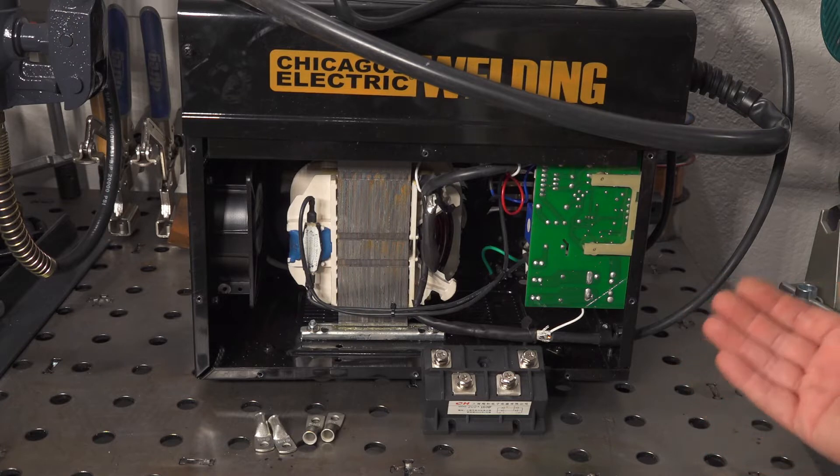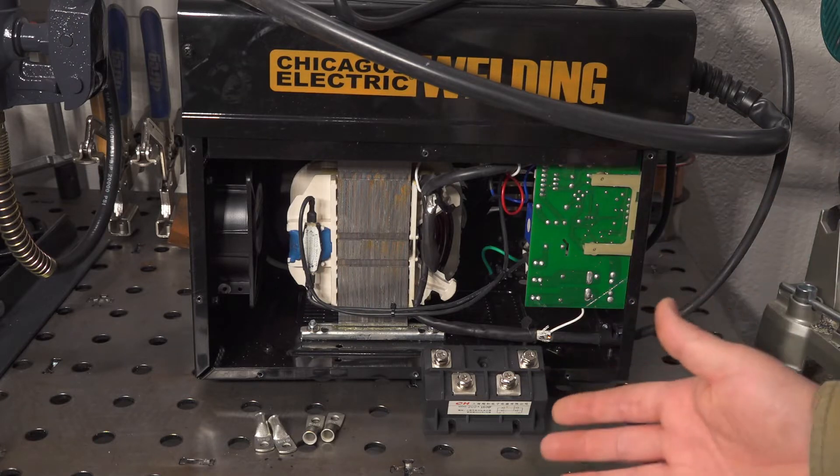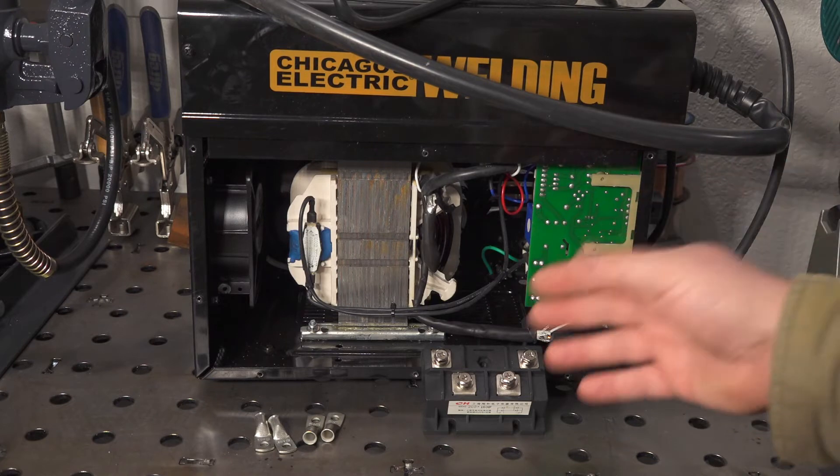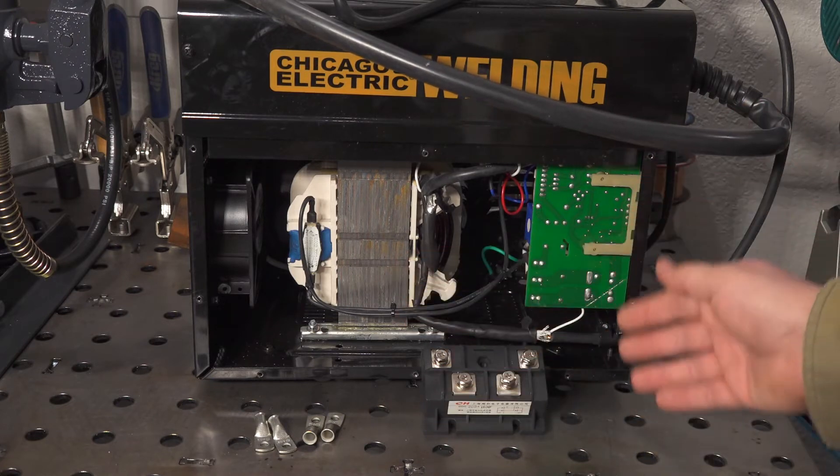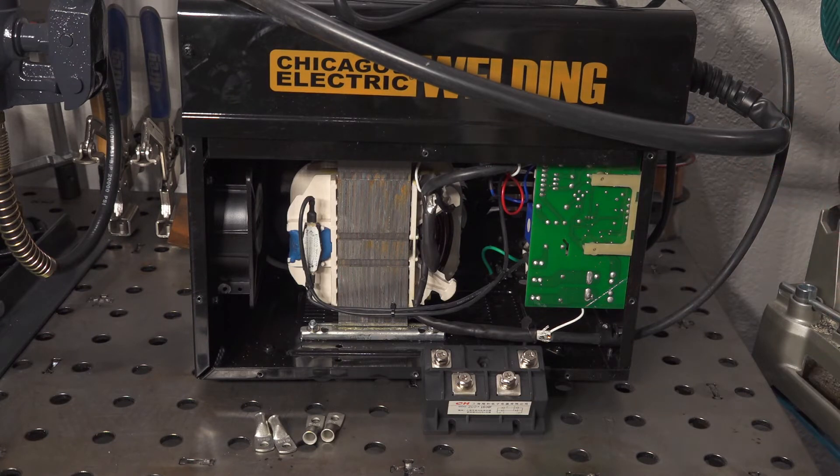So in this video I'm going to see how much better it does if you convert it to a DC output in basically the simplest way possible. Now a lot of people have converted this machine over to DC output and some of them will put capacitors in there or chokes to try and smooth out the arc and get the best results they can.